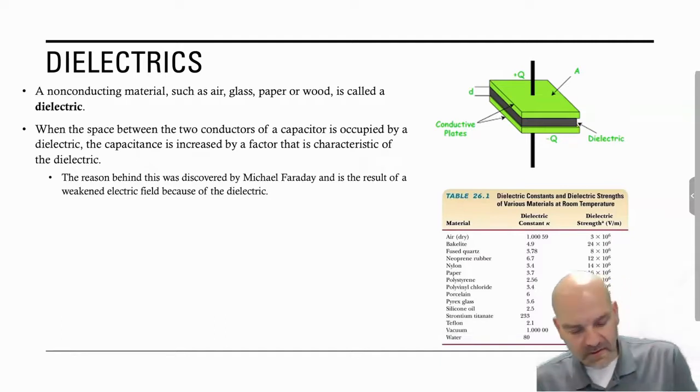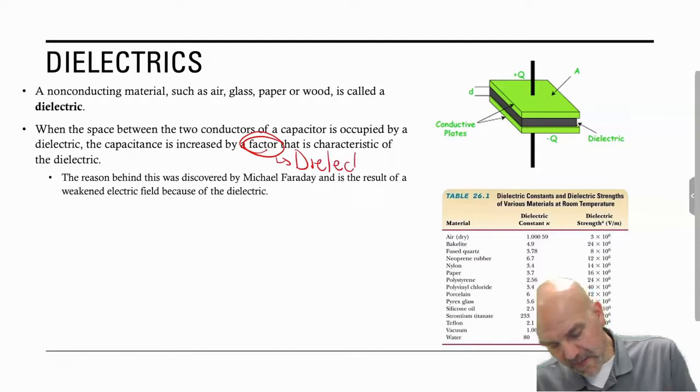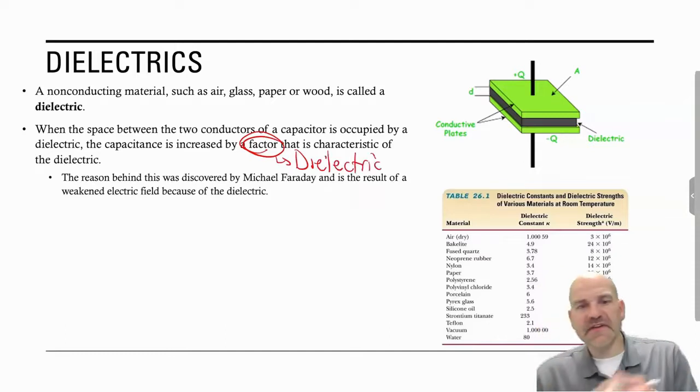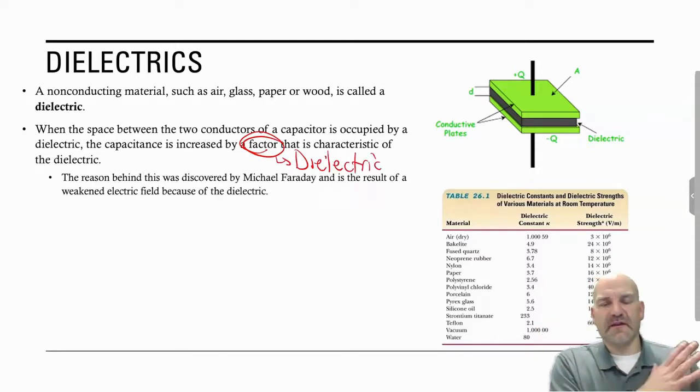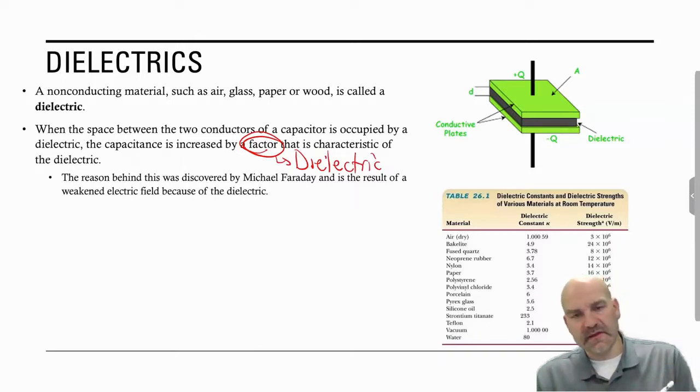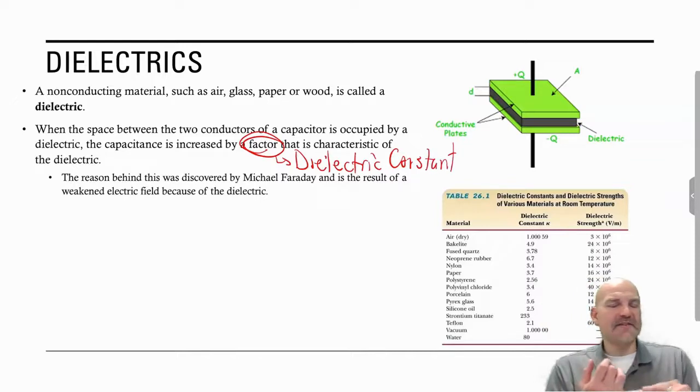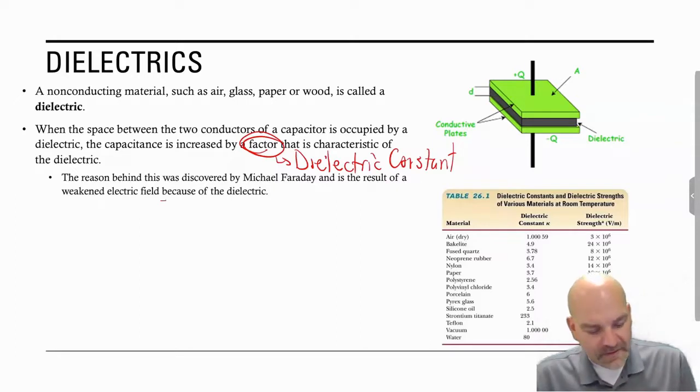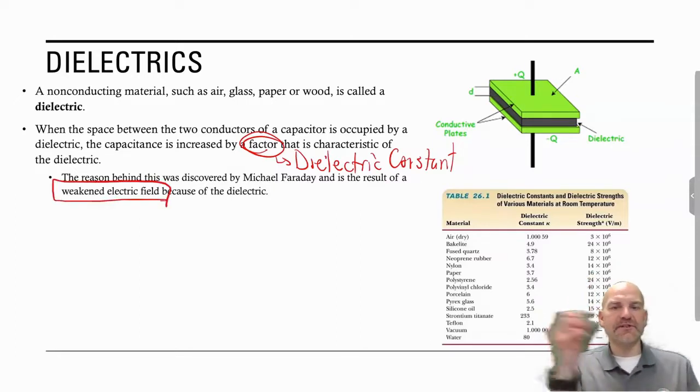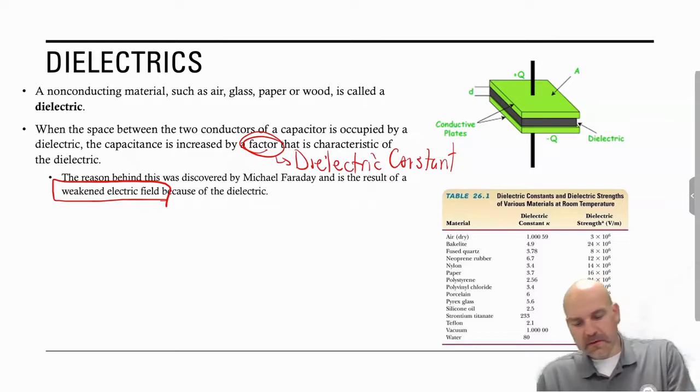There's a factor that we call the dielectric constant that changes the characteristic of that capacitor. It changes all the values of that capacitor. It changes the capacitance. It changes the stored energy. It changes the E field. In fact, it weakens the E field once you put that dielectric in it.